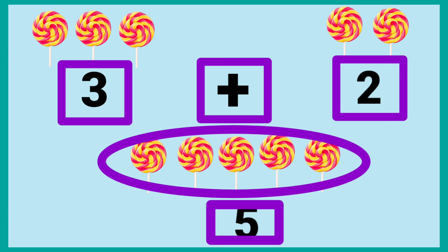Three lollipops and two lollipops make five lollipops. Means three plus two is equal to five. Three plus two is equal to five.